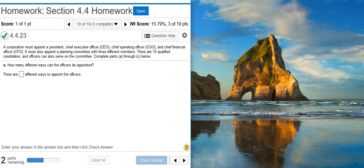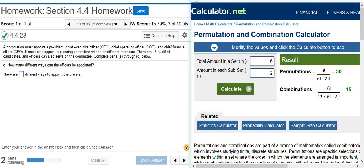Okay, Part A asks, how many different ways can the officers be appointed? Well, to get this value, we need to calculate either permutation or combination. And since the scientific calculator in my computer is not equipped to calculate permutations and combinations, I've gone out to a website called calculator.net, which has this handy permutation and combination calculator.